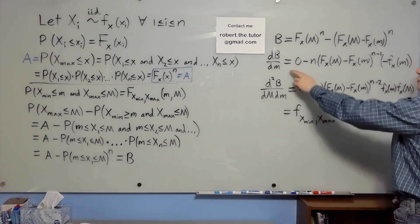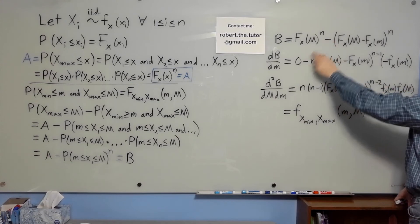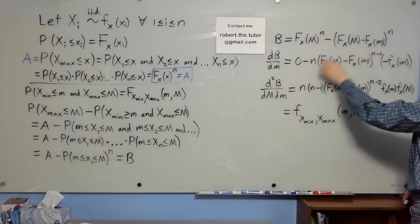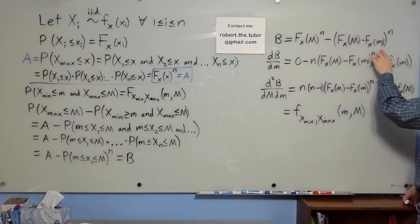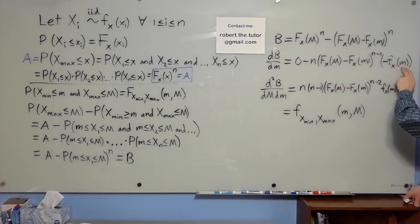We take the derivative with respect to little m. That term vanishes. We have a minus sign, we get down an n, this expression to the n minus 1, and the derivative of this is negative small fx of little m.